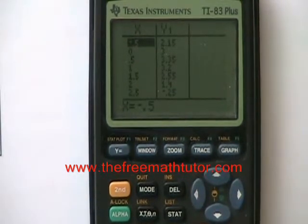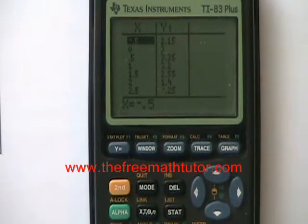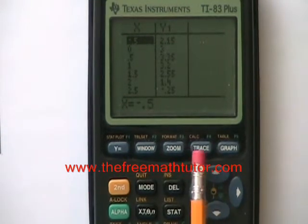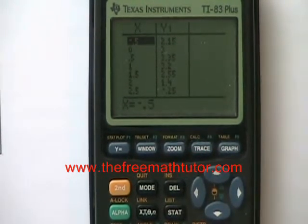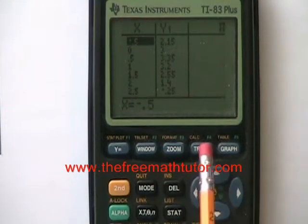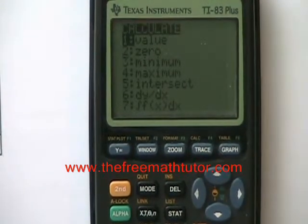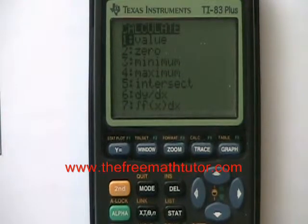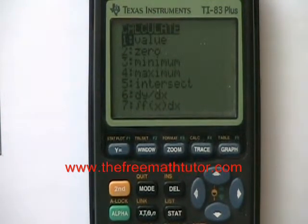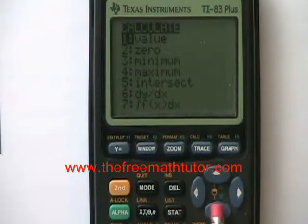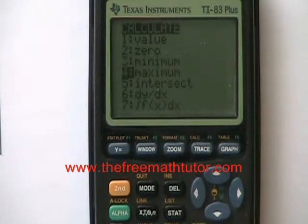Now I want to find my vertex. To do that, I'm going to use the CALC interface, which you can see in yellow above the TRACE button. So if I hit 2nd CALC, I can find my vertex. I have to know whether it's a minimum or a maximum. Because this parabola opens downwards, it's going to be a maximum. So using the down button, I go down to 4: maximum and I hit ENTER.